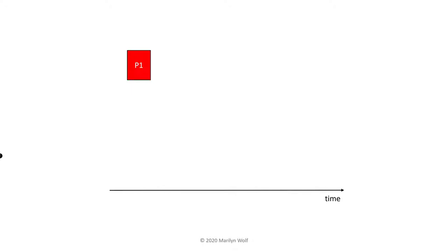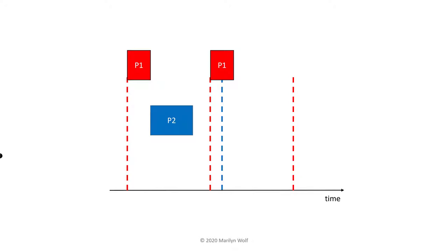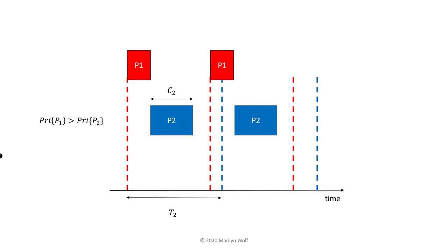Task P1 has computation time C1, and its period T1 goes from here to here. Here's another execution of P1. Here's P2 — it has a somewhat longer deadline, period T2, and computation time C2. In this example, we've set the priority of P1 to be higher than the priority of P2. That means that so long as P1 is executing, P2 cannot execute. In the first interval, P1 finishes before P2 starts. In the next period, P1 executes and finishes before P2 starts.